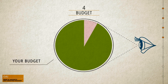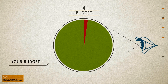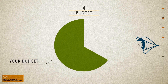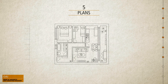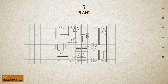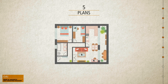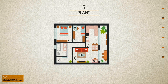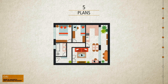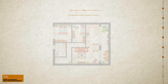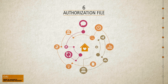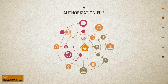The architect draws up a file with all the plans of execution and all the technical details: the detailed plans, the specifications, the metrics. The transition from the sketch to the project requires many reflections related to legislation and regulations and respect for the environment.